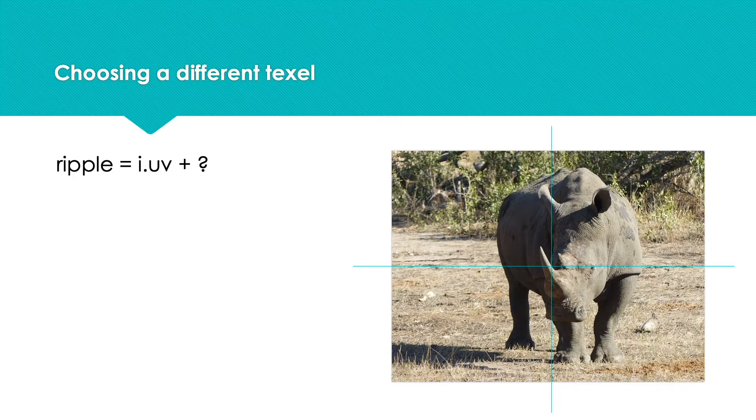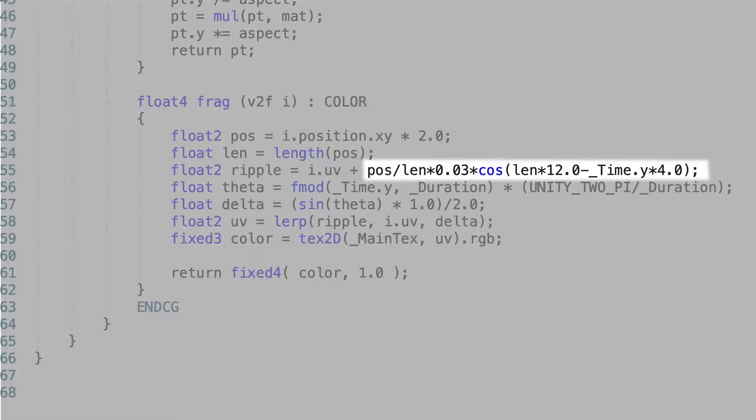By default, we grab the texel from position i.uv, but if we adjust this value we can create all manner of effects. Notice that the value ripple is generated by adding pos/len*0.03*cos(len*12 - _Time.y*4) to the current value for i.uv.